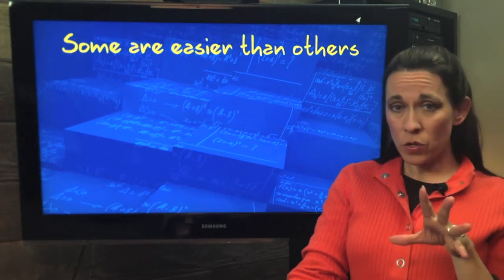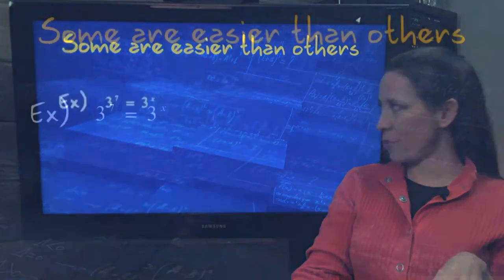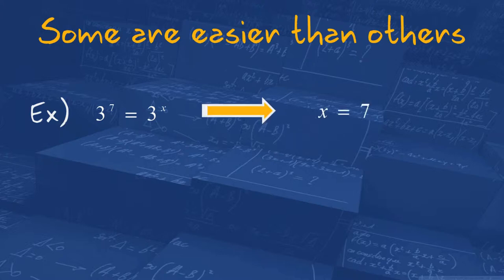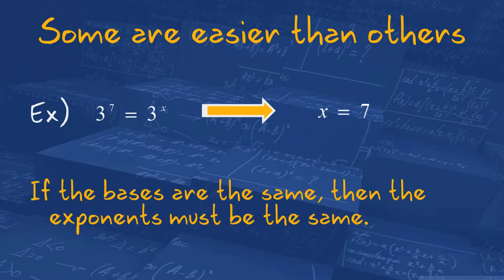Now, some exponential problems are easier than others. We've got here 3 to the 7th equals 3 to the x. I call this the kindergarten way of looking at it: if your bases are the same and both sides are equal, then your exponents must be the same. So if 3 to the 7th equals 3 to what power? That power has to be 7, because only 3 to the 7th equals 3 to the 7th. If the bases are the same, the exponents must be the same.